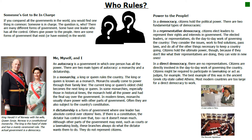In a democracy, citizens hold the political power. There are two fundamental types of democracies. In a representative democracy, citizens elect leaders to represent their rights and interests in government. The elected leaders, or representatives, do the day-to-day work of governing the country — they consider the issues, work to find solutions, pass laws, and do all the other things necessary to keep a country going.